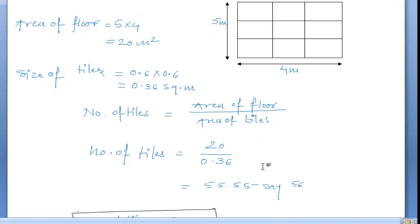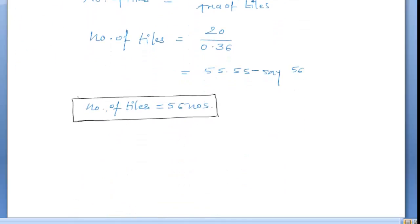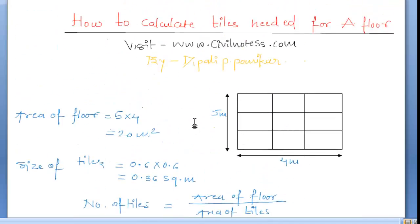And area of tiles is 0.36. We get the number of tiles is 55.55. After this calculation, 20 upon 0.36, we say it as 56. We get the number of tiles is 56 in this area.